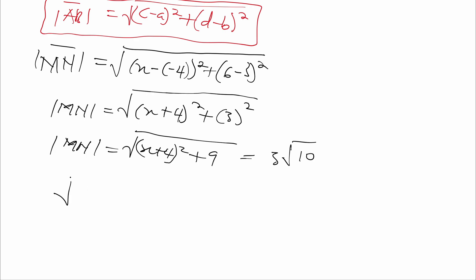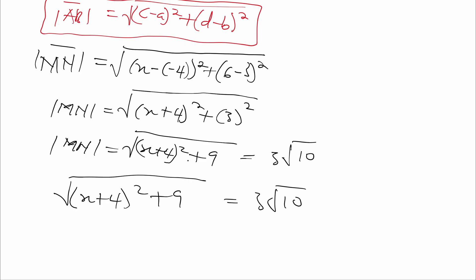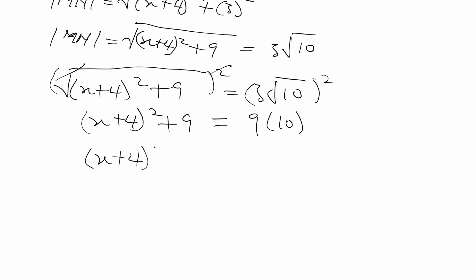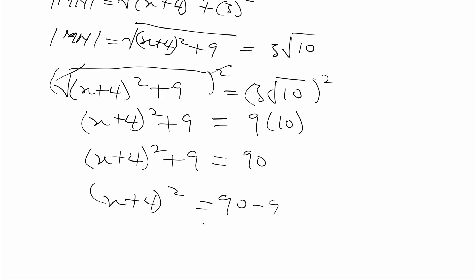So we have the relation: the square root of (x plus 4) all squared plus 9 is equal to 3 root 10. To eliminate the square root we square both sides, so squaring cancels the square root and we'll be left with (x plus 4) all squared plus 9 is equal to 9 times 10. So we have (x plus 4) all squared plus 9 equals 90. Therefore (x plus 4) all squared will be equal to 90 minus 9, and 90 minus 9 is equal to 81. So (x plus 4) all squared is equal to 81.